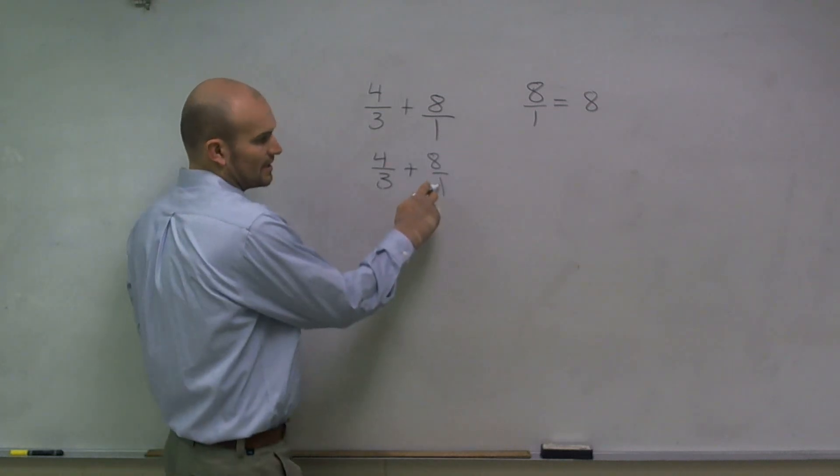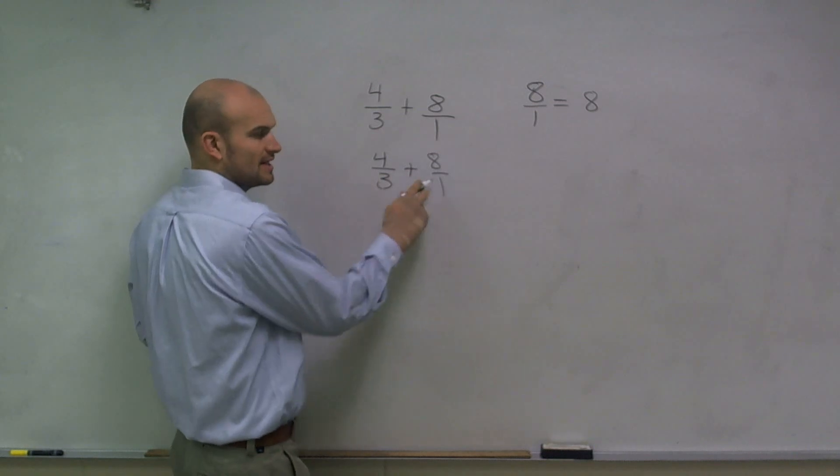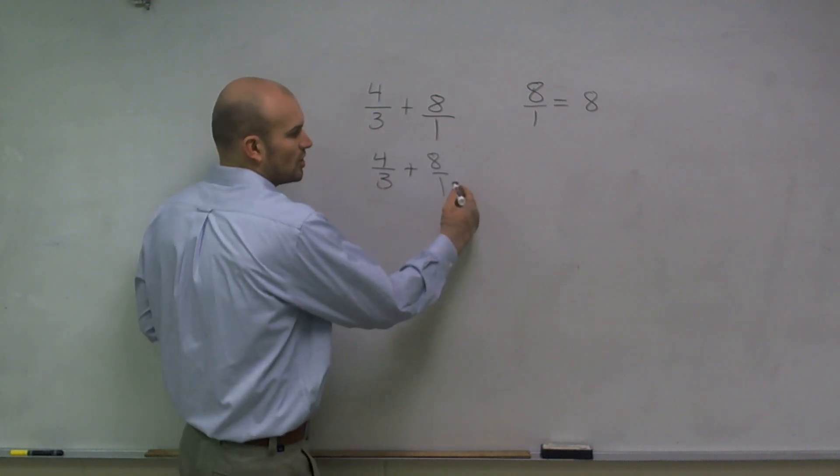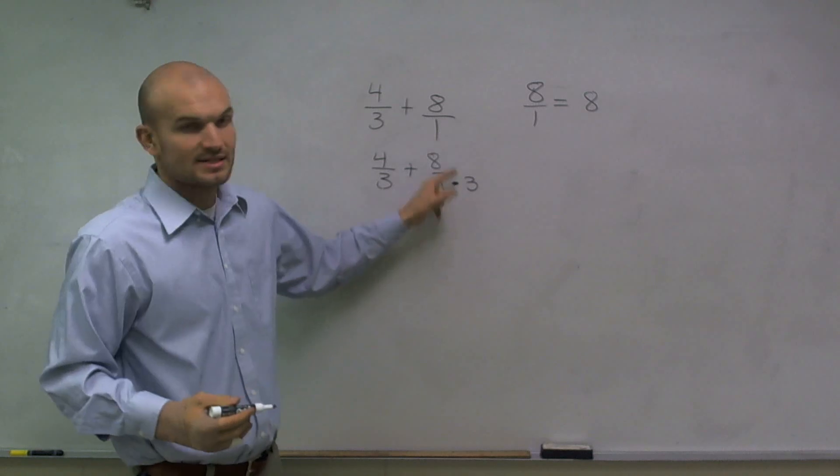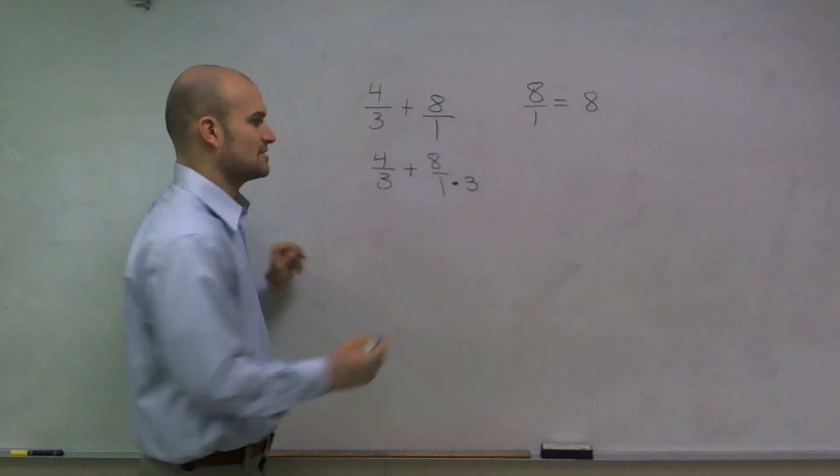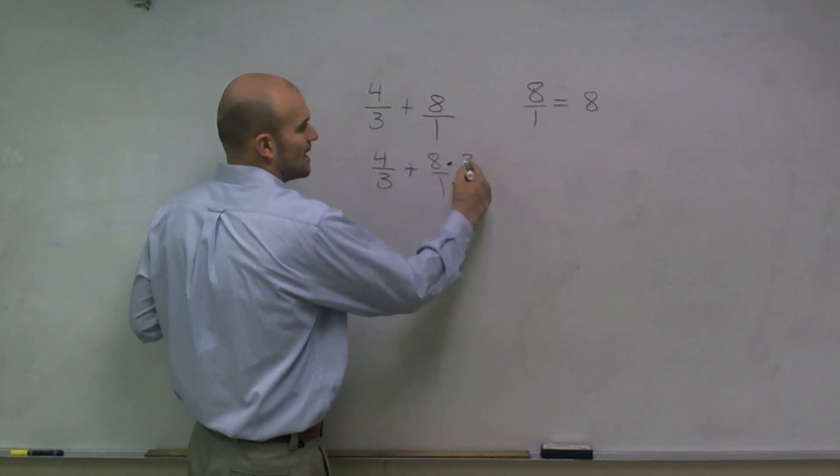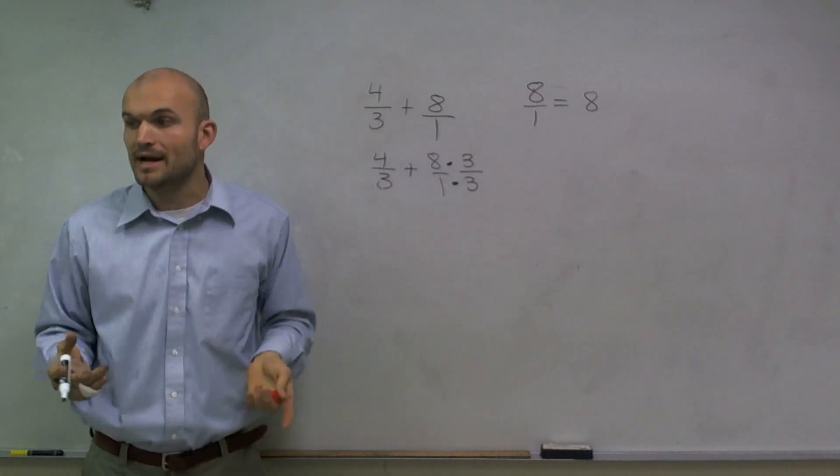So to get this to be, this is already 3, so I don't need to change it. But to get this to be 3, I need to multiply by 3. Now, to keep this the same type of fraction, we'll call it equivalent fractions, I'm going to have to multiply the top and the bottom by 3.